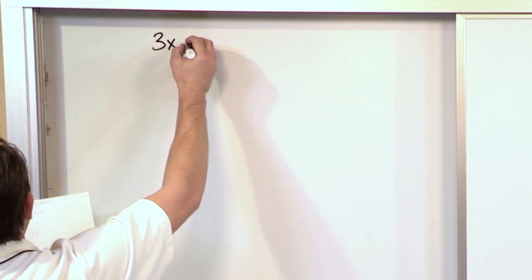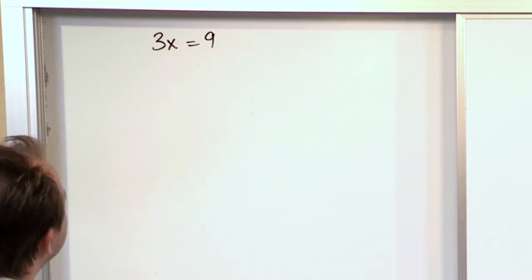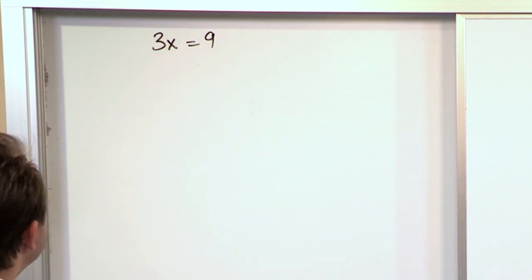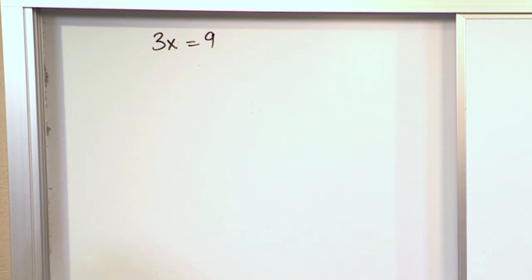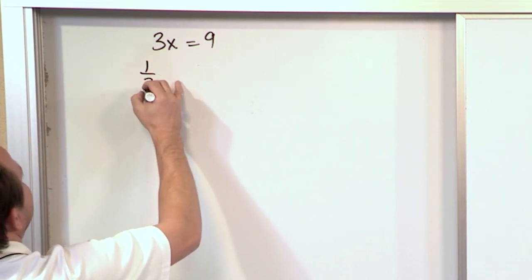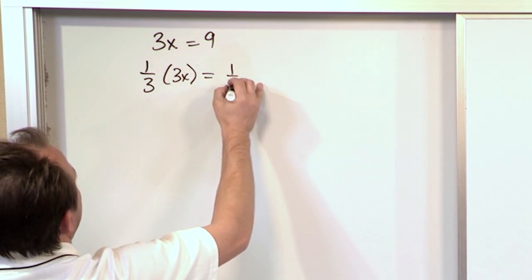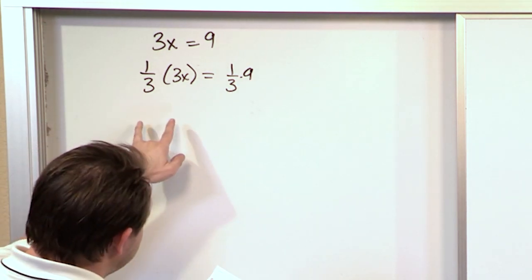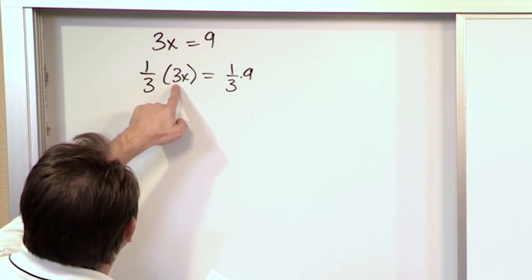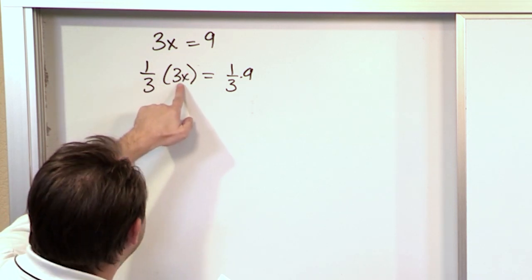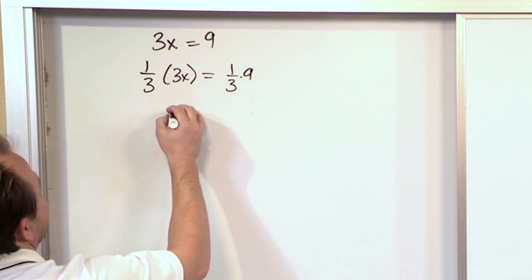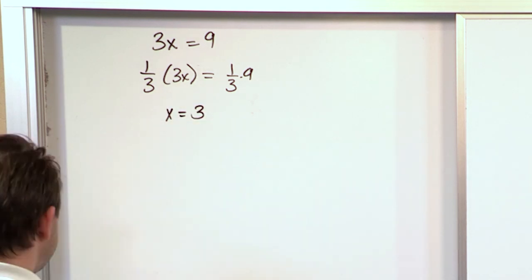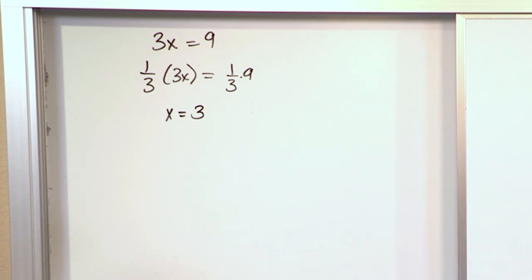First of all, what is an inverse of a matrix? I'd like to draw an analogy back from algebra. Remember how you might solve three x equals nine. We all know you divide both sides by three, but really what you're doing is multiplying the left by one third and the right also by one third. On the left hand side the one third cancels, giving you a one in front of the x, and on the right hand side you're left with x equals three.